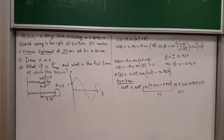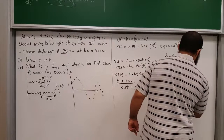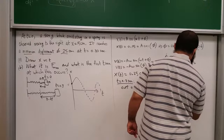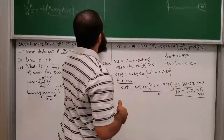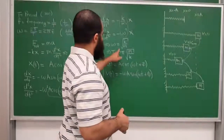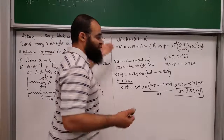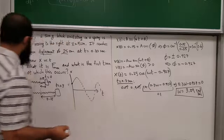So ω = 3.09 rad/s. Now since we have ω, we can find the spring constant k. We know ω² = k/m, so k = mω². The mass is 0.5 kg and ω = 3.09 rad/s, so k = 0.5 × (3.09)² ≈ 4.77 N/m.